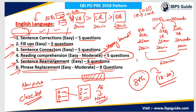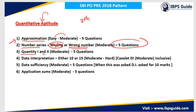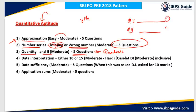Now let's move on to the quantitative aptitude section. There were total 5 questions from approximation which were of easy to moderate level. Number series was asked — not missing number series but wrong number series — though you can also expect missing number series in the 8th July paper, asked for 5 marks. Quantity 1 and Quantity 2 comparison type questions were also asked for 5 questions — these included questions from quadratic equations as well as miscellaneous chapters. You have to find the values of both quantities and compare them to find the answer.